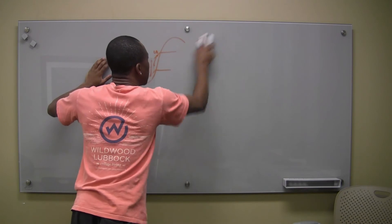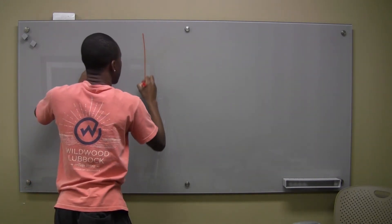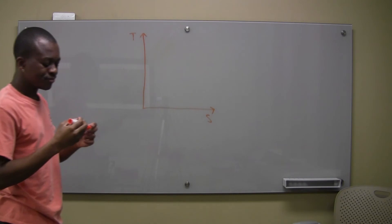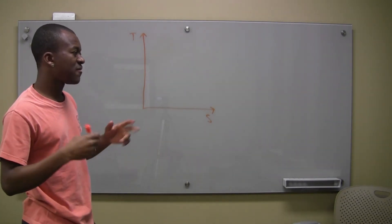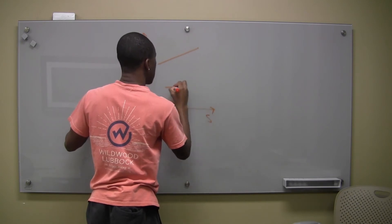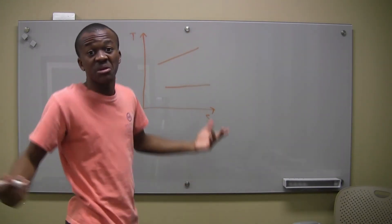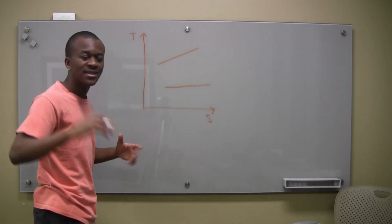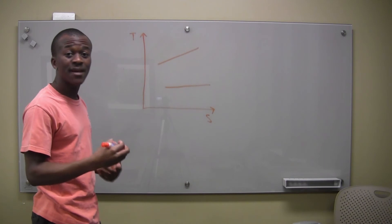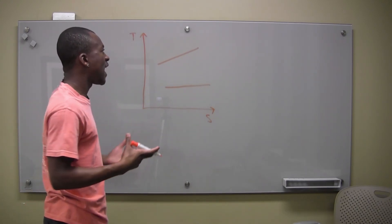Now let's deal with an ideal gas — it's basically going to be the same thing. We have our T and S axes again, but now instead of a dome we get curved pressure lines. There are generally two pressures we're dealing with. I'm not entirely sure whether the lines should be at different slopes or drawn parallel, but the more correct way is likely at differing slopes. Either way, the key is knowing there are two different pressure levels.